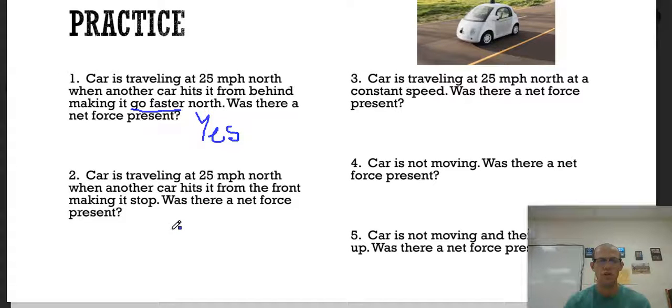All right. Two, a car is traveling at 25 miles per hour north again when another car hits it from the front, making it stop. Was there a net force present? So did the motion change? Yeah, it was going 25 miles per hour and then it got to zero. In order for that to happen, there has to be an acceleration. Whenever your velocity changes, there's an acceleration. And whenever there's an acceleration, there's a force. Because remember, I put on that one side slide, F is equal to MA, the mass times the acceleration. We're not going to calculate anything yet until the next chapter. But if there's an acceleration, there's a number there, there's going to be a number there. So this is a yes as well.